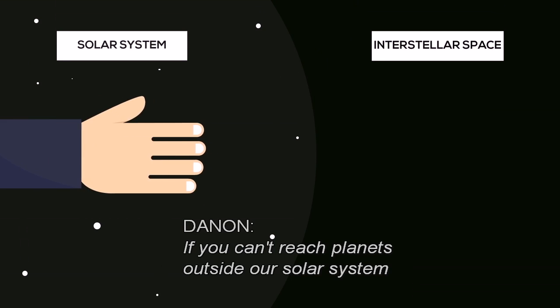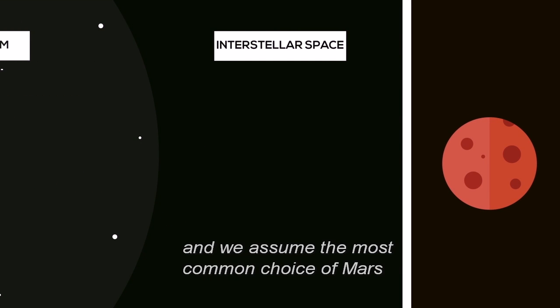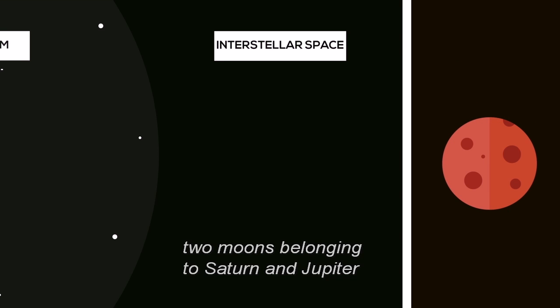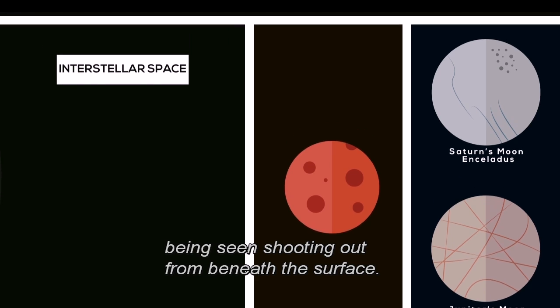If you can't reach planets outside our solar system for the current time, and we assume the most common choice of Mars would also become too hot due to the sun expansion, two moons belonging to Saturn and Jupiter have caught our eye due to water vapour being seen shooting out from beneath the surface.